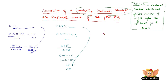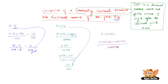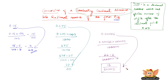Let us convert 0.00026 into a rational number of the form P by Q. After the decimal point there are 5 digits, so we multiply and divide 0.00026 by 1 followed by 5 zeros, which is 1,00,000. That gives us 26 by 1,00,000. The largest number that can divide both 26 and 1,00,000 is 2. So 26 by 2 is 13 and 1,00,000 by 2 is 50,000. Therefore, 13 by 50,000 is the rational form of 0.00026.